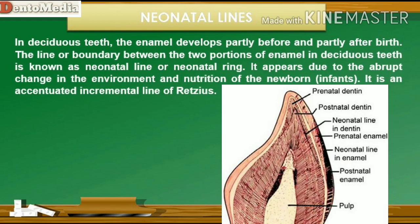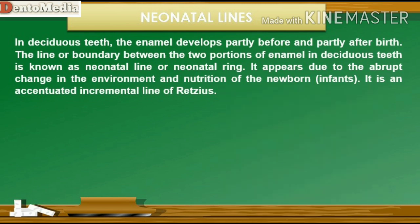In deciduous teeth, the enamel develops partly before and partly after birth. The line or boundary between the two portions of enamel in deciduous teeth is known as the neonatal line or neonatal ring. It appears due to the abrupt change in the environment and nutrition of the newborn infant. It is an accentuated incremental line of Retzius.